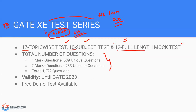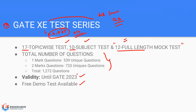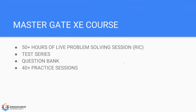The GATE XC Test Series is valid until GATE 2023 — until your exam. There is also a free demo test available. Regarding the question bank validity: it is 365 days from the date of registration. For example, if you register on September 6th or 7th, the question bank will be valid until September 6th or 7th of 2023. The test series is valid until GATE 2023, and for 2024 we'll launch a new one. Registration links and demo test links are all in the description.